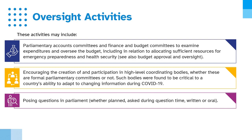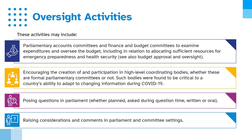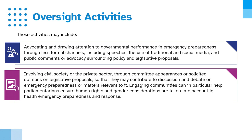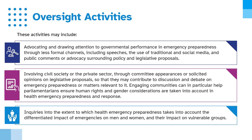Additional oversight activities include posing questions in Parliament — whether planned, asked during question time, written or oral — and raising considerations and comments in Parliament and committee settings. Parliamentarians can also advocate and draw attention to governmental performance through less formal channels, including speeches, traditional and social media, and public comments surrounding policy and legislative proposals. Involving civil society and the private sector through committee appearances helps contribute to discussion on emergency preparedness. Engaging communities can help ensure human rights and gender considerations are taken into account in health emergency preparedness and response.